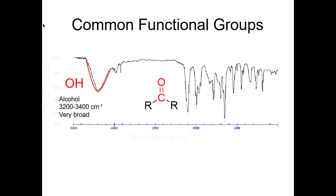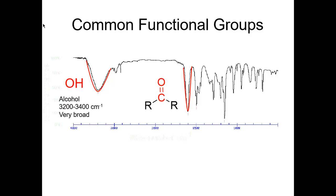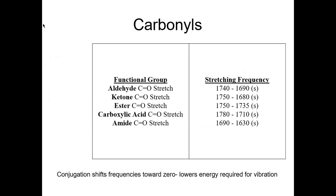Another key one is the carbonyl functional group — a sharp, strong stretch. There are many different carbonyl groups: ketones, aldehydes, esters, amides. They all show up in the same region. Aldehydes appear from 1740 to 1690, and if you just remember 1600 to 1700 for carbonyls, that covers the range.